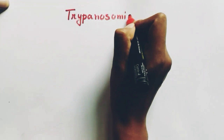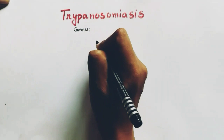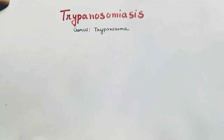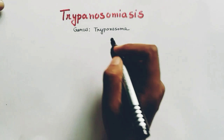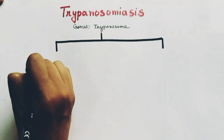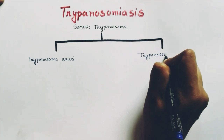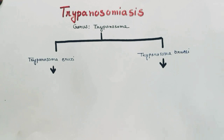In this video, we are going to talk about trypanosomes, which causes the disease trypanosomiasis in the human body or in cattle. It comes under the genus Trypanosoma. There are two species of trypanosomes which cause disease in humans: Trypanosoma cruzi and Trypanosoma brucei.